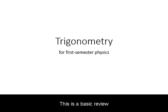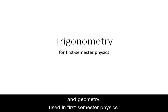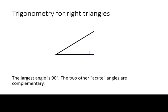This is a basic review of trigonometry and geometry used in first semester physics. Trigonometry refers to measurement of triangles. In physics, the right triangle specifically is often used.